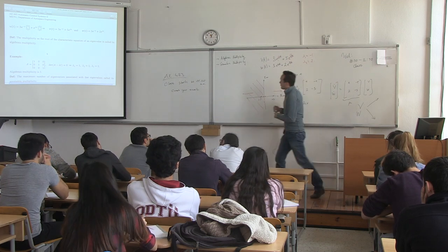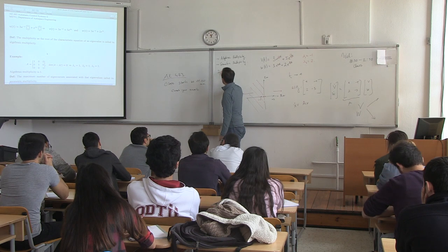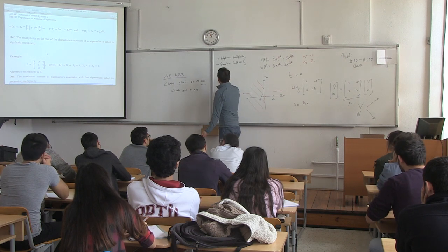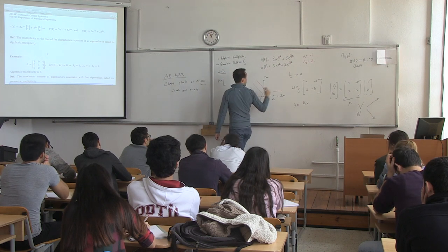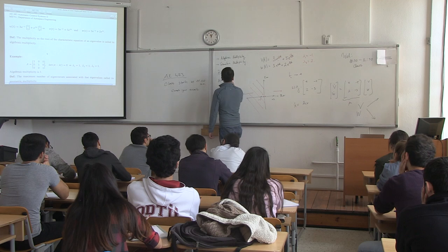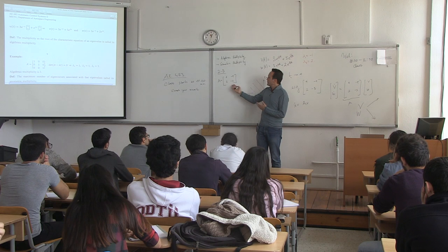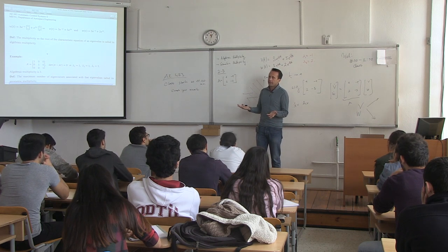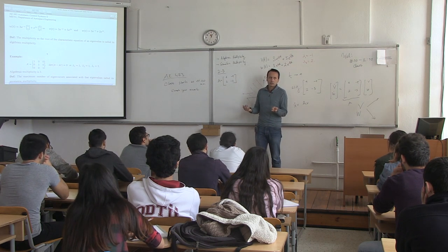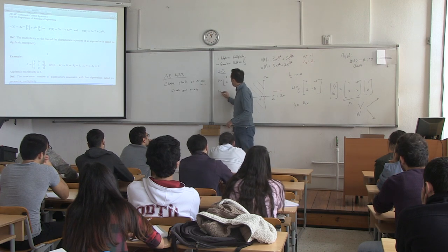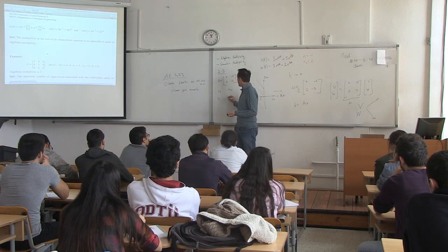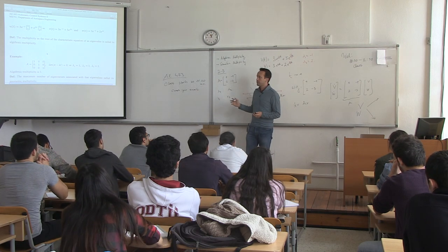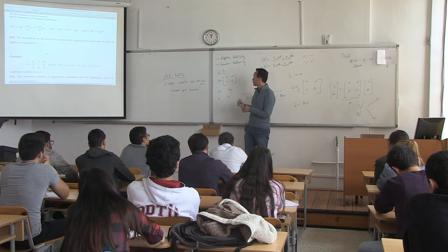Consider a two-dimensional system with an A matrix that's 2-by-2 — something like [4, -5; 2, -3]. A second-order system like this would typically have two eigenvectors. We found two eigenvalues lambda 1 and lambda 2, and two eigenvectors x1 and x2. That's what you would typically find for a two-dimensional system.